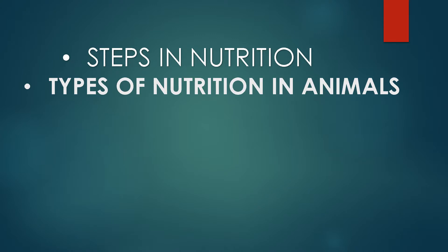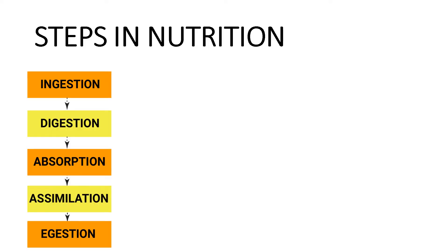Hello dear students, welcome to Varsha Tutorials. Standard 7 Science Lesson No. 4, Nutrition in Living Organisms, Part 4. For watching Part 1, 2 and 3, click the link given in the description below. In this video, we are going to study two more important topics: steps in nutrition and types of nutrition in animals, i.e. holozoic nutrition, saprozoic nutrition and parasitic nutrition. So let us begin with steps in nutrition.